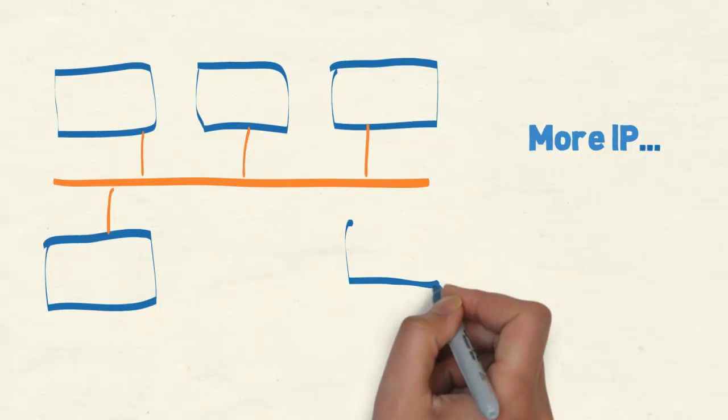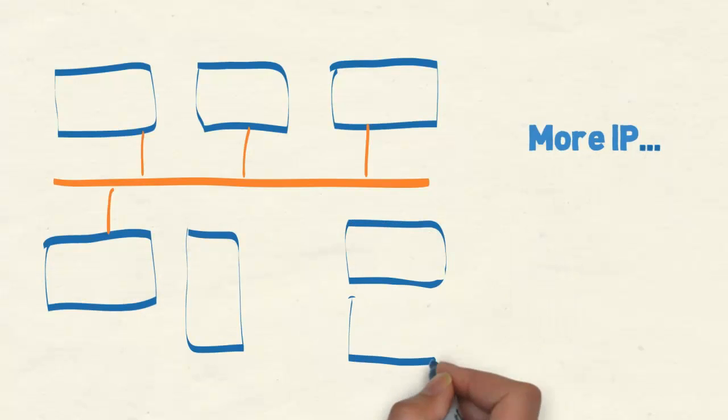With 10 or more IP blocks now common on large FPGAs, there may be dozens of different clocks on a single chip.